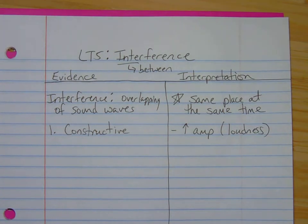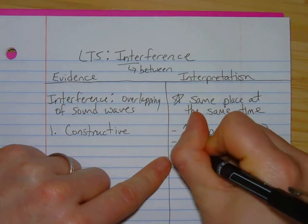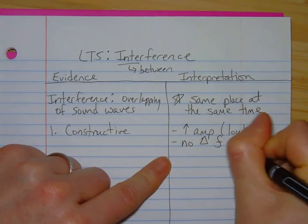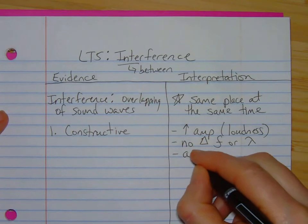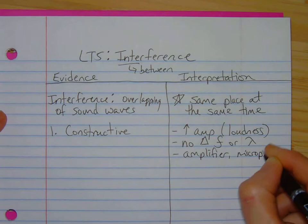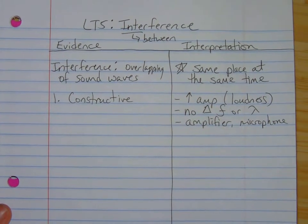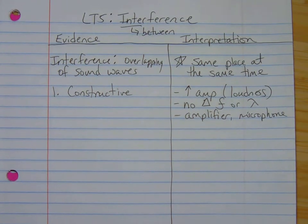So constructive interference is used to make a sound louder. We do not want to change frequency or wavelength, right? So a good example of this, just think like an amplifier, microphone. If you have somebody on stage, granted if it was me on stage it wouldn't really matter. But if you've got somebody on stage singing, you do not want to distort their voice. You simply want to make them louder so that the audience can hear them.